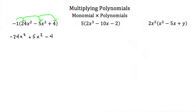The same thing works with numbers other than negative 1. Here we have 5 times (2x cubed minus 10x minus 2). We can distribute this 5 inside the parentheses through multiplication, and we just multiply every term by 5. So 2x cubed times 5 would be 10x cubed, negative 10x times 5 would be negative 50x, and negative 2 times 5 is just negative 10.